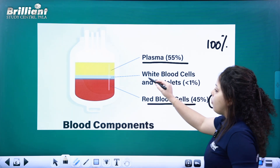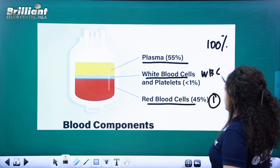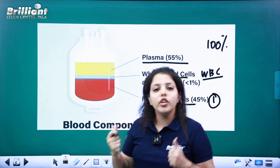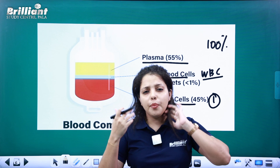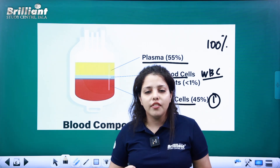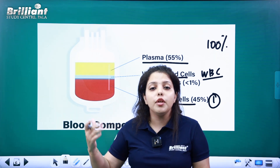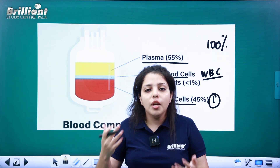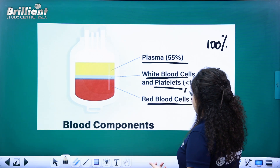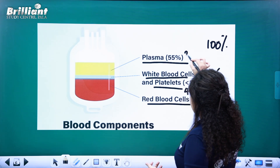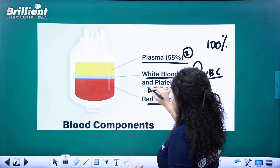We also have white blood cells — WBC. WBC provides immunity. For example, during coronavirus, WBC provides immunity. And the fourth component is platelets. So the four components are: first, RBC; second, plasma; third, WBC; and fourth, platelets.